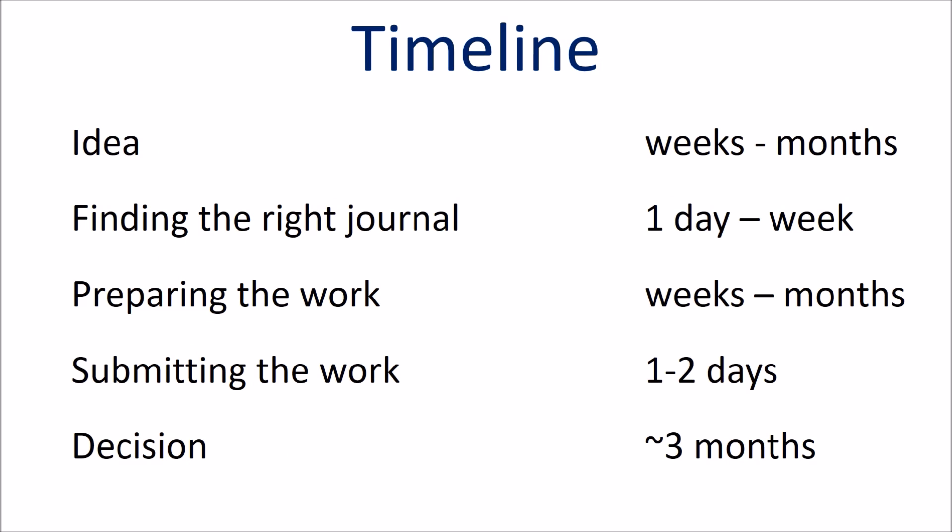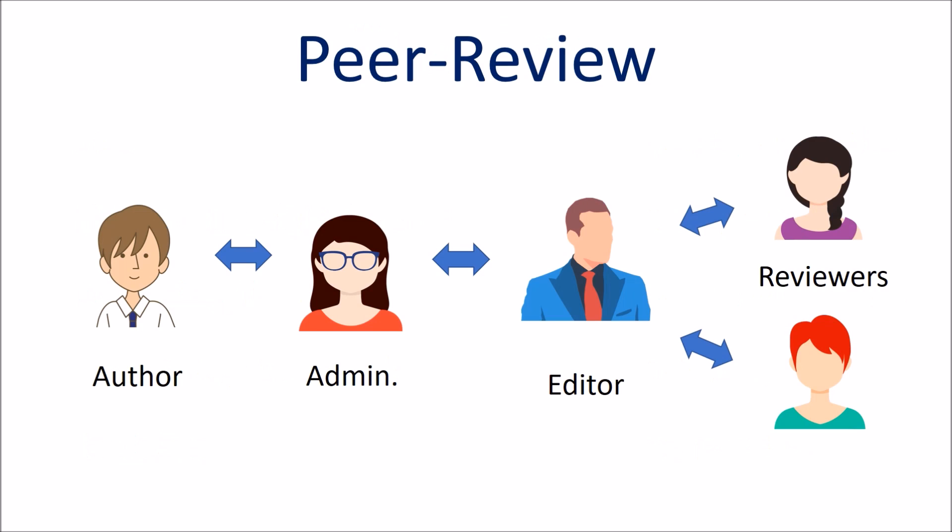The time it takes to submit an article for review is much longer than you would expect. Just coming up with an idea can take months of planning and a literature review to ensure no one has written such an article previously. Even submitting your work on the journal's online website can take multiple days. When you submit an article, it goes to an administrator, then to an editor who chooses reviewers. The process is usually blinded so reviewers are not told who the author is, then the reviewers send their feedback to the editor, and the editor makes a decision to accept or reject.